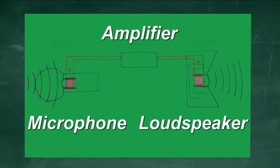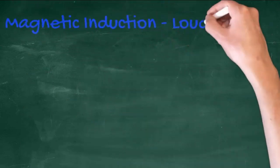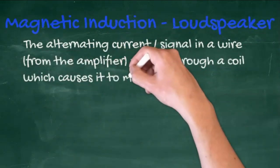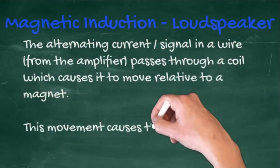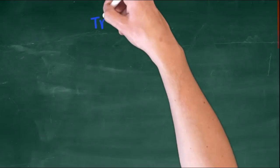That signal is picked up by an amplifier and fed to a loudspeaker. In the loudspeaker, the alternating signal from the amplifier passes through a coil which causes it to move relative to a fixed magnet. This movement causes a speaker cone attached to the coil to vibrate, and that's what you hear.